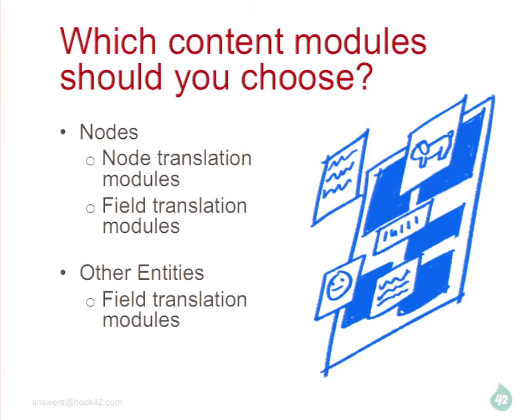The tricky bit is knowing which module to use when translating nodes. If you're translating other entities — comments, users, taxonomy terms — you're going to use the field translation modules. But if you're doing nodes, which is going to be most of what you want to translate, you have two methods of being able to translate. This is where the confusion arises.